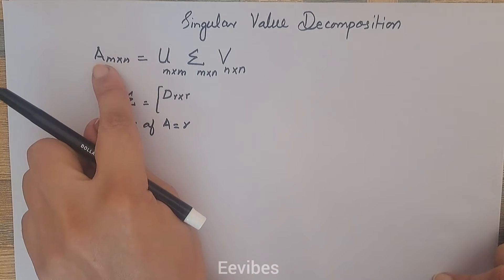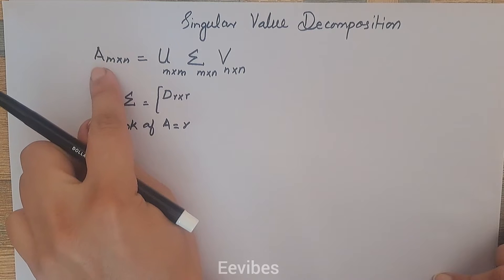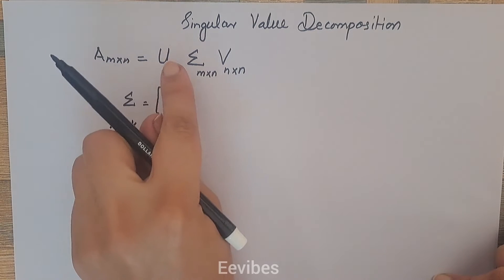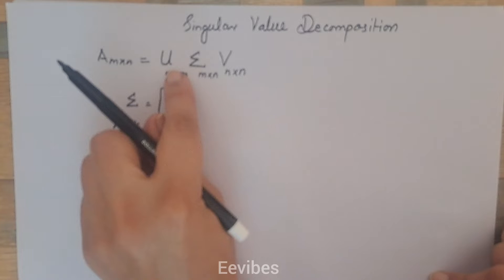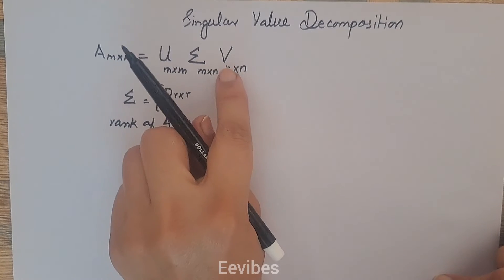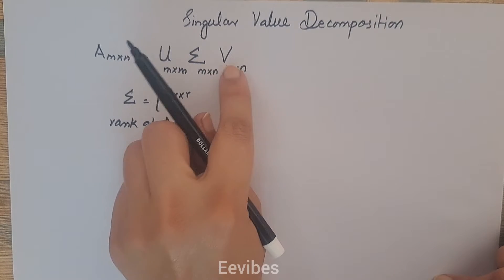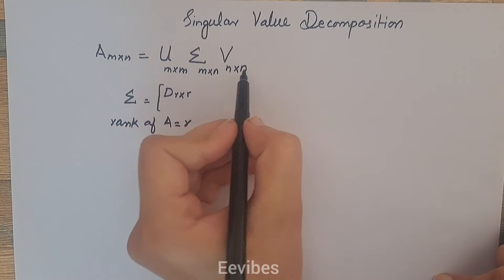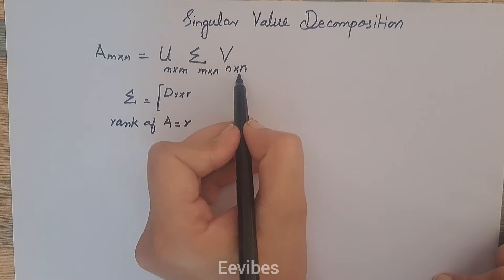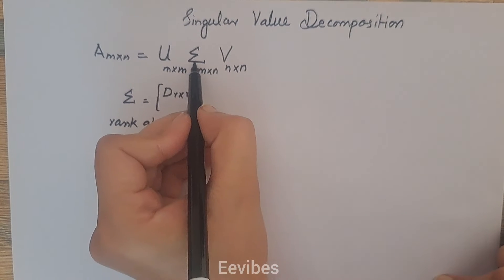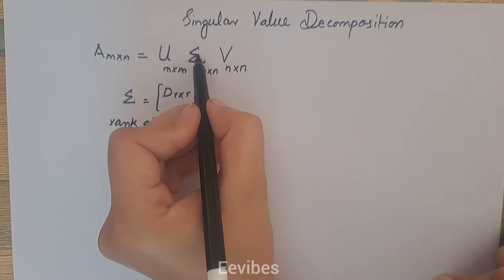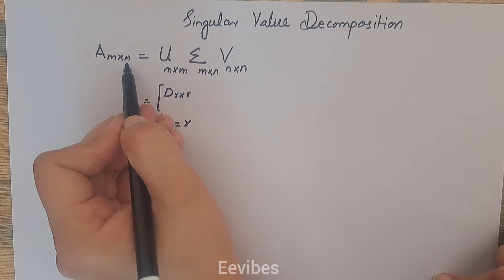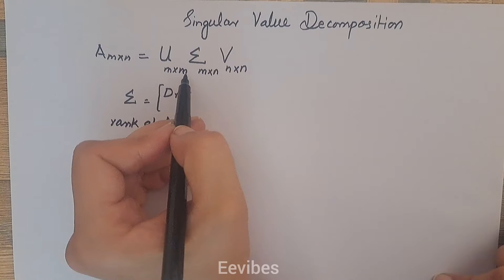First of all, if we have a matrix A of order M×N, then we can decompose it into three matrices U, Σ, and V, where U is a matrix of order M×M, V is a matrix of order N×N, while the order of Σ is equal to the order of the matrix A, which is M×N.